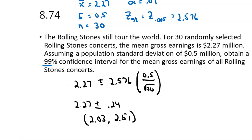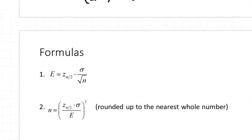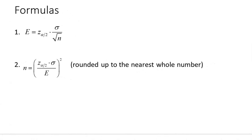Margin of error is how far from the mean you are on either side. In the Rolling Stones problem, the margin of error is 0.24 million. You can flip this around: if you tell me how much error you're willing to accept, I can tell you how many items you need in your sample to produce an error no more than that. Round the sample size up to the nearest whole number — even if your calculation gives 84.2, round up to 85, because just 84 is not enough.